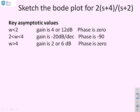First then, if we're going to sketch the Bode diagram, we want to ask ourselves what the key asymptotic values are. So if omega is less than 2, so we're talking about low frequencies, you'll see that the gain is 4, or 12 decibels, and the phase asymptote would be 0.